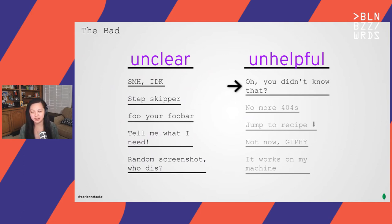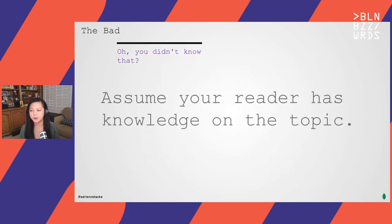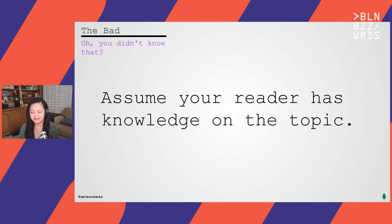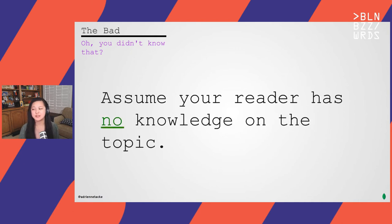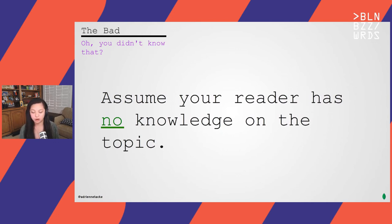Those are all the things that make learning resources unclear. The next few things make them unhelpful. Something I call 'oh you didn't know that' — a lot of tutorials make the assumption that the reader has some baseline knowledge about the topic. What you should really be doing is assuming your reader has no knowledge at all. That's why we want to be explicit, make sure any additional things they need to know are told to them beforehand, and go into detail before continuing on in your resource.